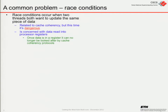A race condition occurs when you've got two or more threads all wanting to update the same piece of data. It's related to cache coherency and thrashing, but this time it's dangerous rather than just a performance hit. It's concerned with data when you load it into a processor register. Once data's in a register, nobody else can see it. Cache coherency is something where everybody is aware of everybody else's cache — if somebody updates their cache, you get a message saying your data is bad. But when something's in a register, it's hidden from view — your own private stash in your wallet. Nobody else knows how many notes you've got there.